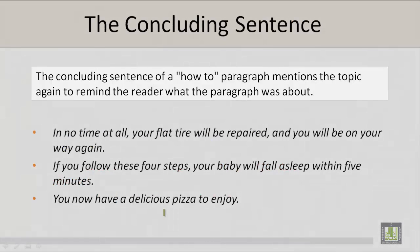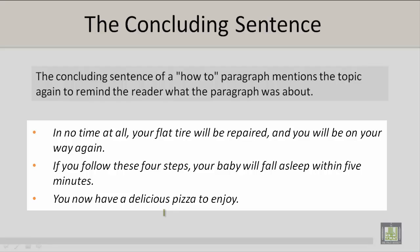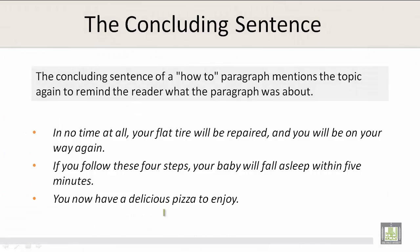The concluding sentence of a how-to paragraph mentions the topic again to remind the reader what the paragraph was about. In no time at all, your flat tire will be repaired and you will be on your way again. If you follow these four steps, your baby will fall asleep within five minutes. You now have a delicious pizza to enjoy. These were examples of a concluding sentence in a how-to paragraph, which mentions the topic again to remind the reader what the paragraph was about.